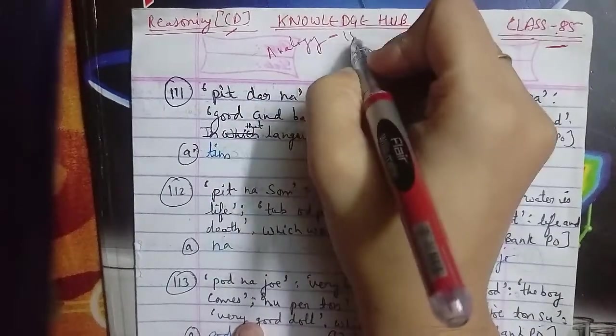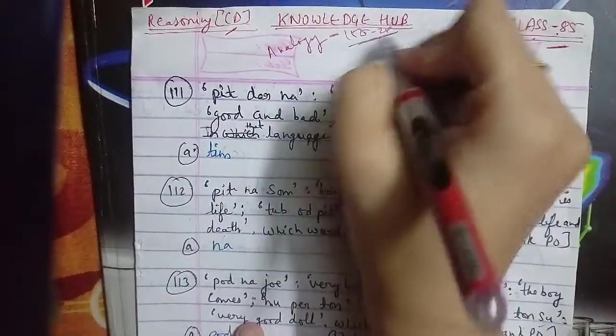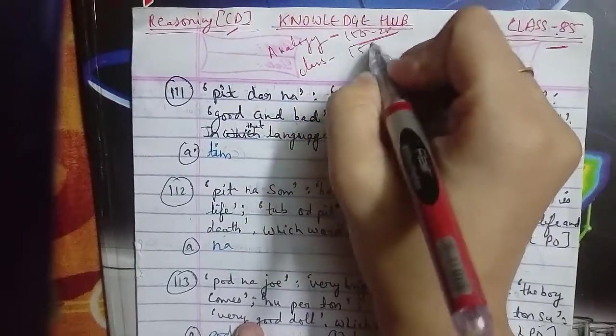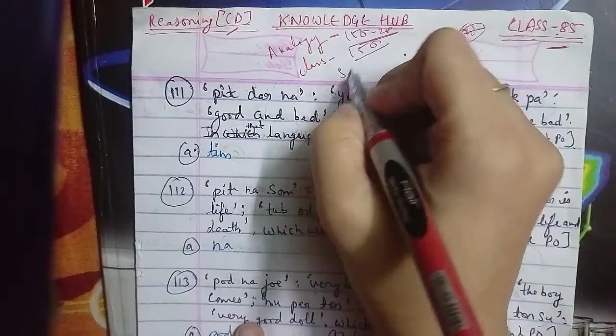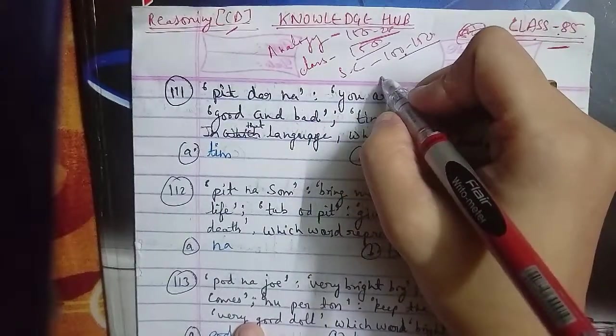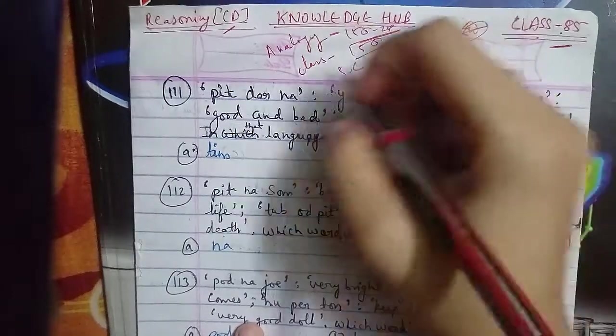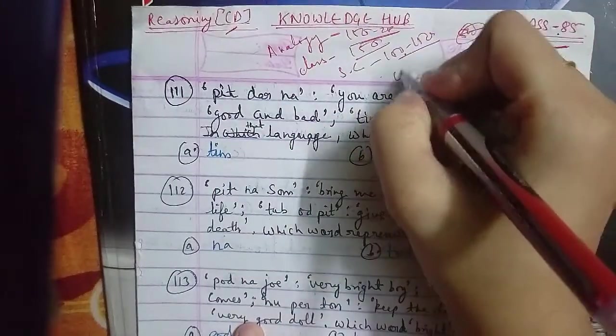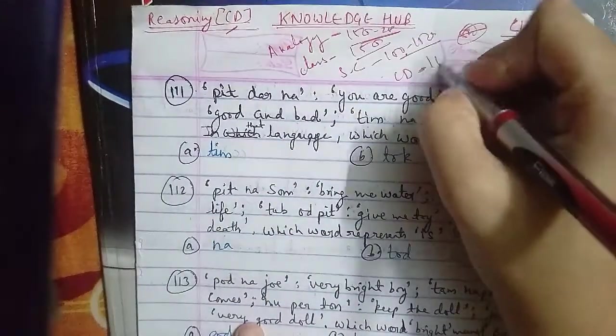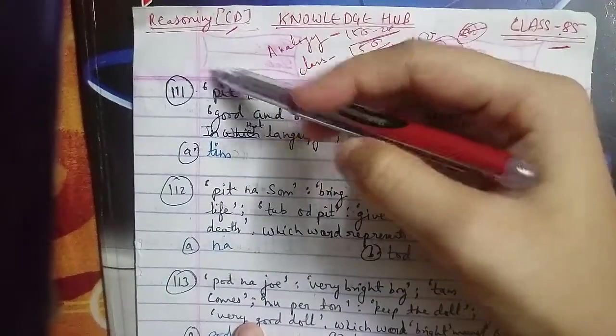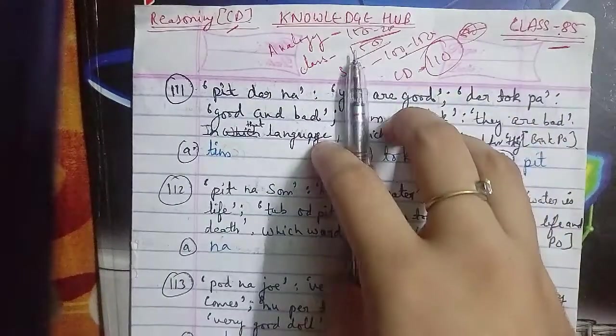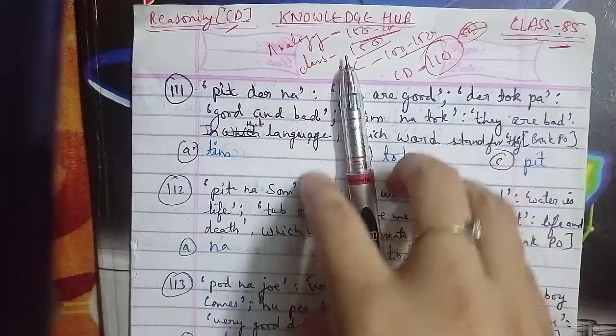First we covered analogy where we did 200 questions. Then classification with 200 questions. Then series completion with 100 questions. And now the fourth topic is coding and decoding. We've already completed 110 questions. We've discussed type 4, type 5, and will continue with type 6 in further classes.